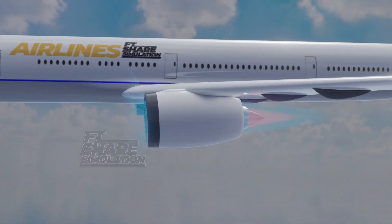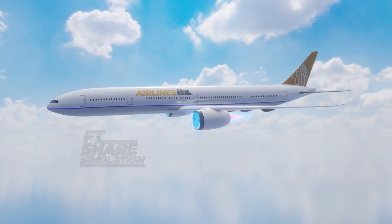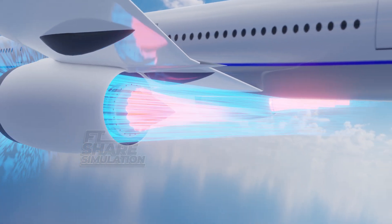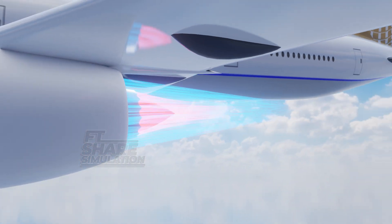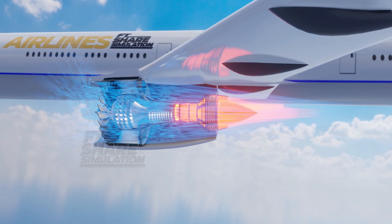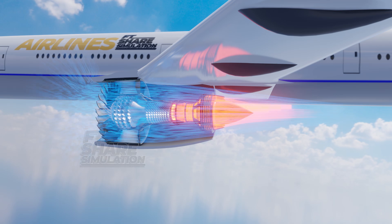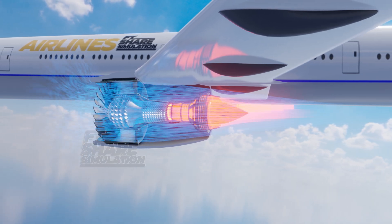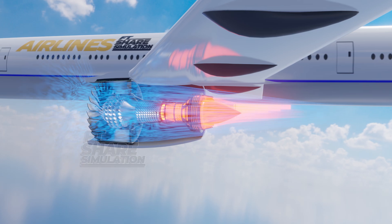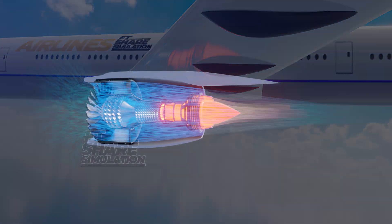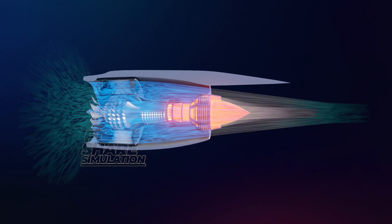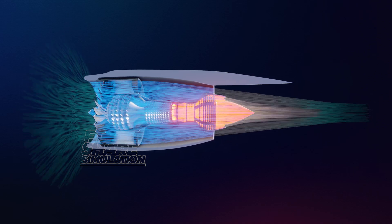High-bypass engines are designed for moving large amounts of air at slower cruising speeds, aiming for better efficiency. Moreover, the exhaust gas speed is a major factor in jet engine noise. High-bypass engines encase the fast-moving core exhaust with slower bypass air, resulting in quieter operation. Hence, these engines are often used in commercial or large military transport aircraft capable of carrying heavy loads.